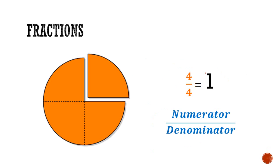Now consider the fraction of parts that are colored in orange when all 4 parts are colored in orange. The fraction represented has 4 as the denominator and 4 as the numerator. So 4 over 4 is a fraction, and we realize that we still have the whole circle — meaning 4 over 4 is the same as 1 whole circle.